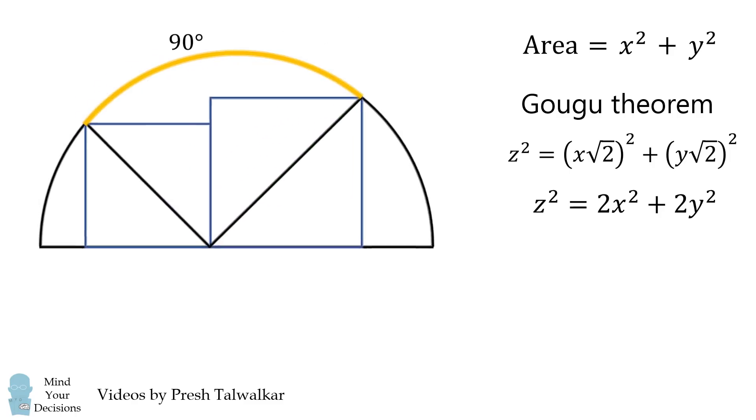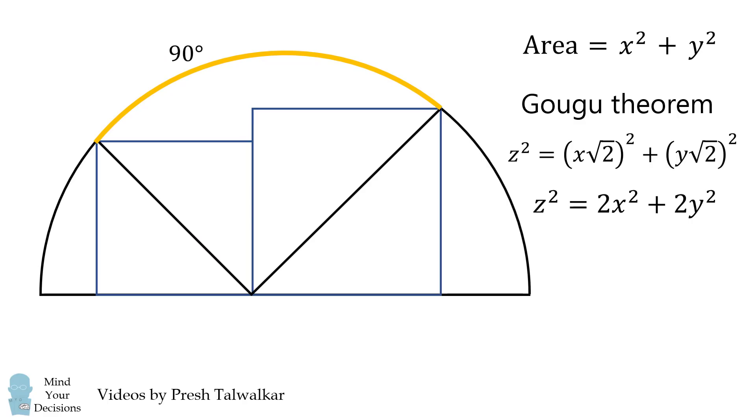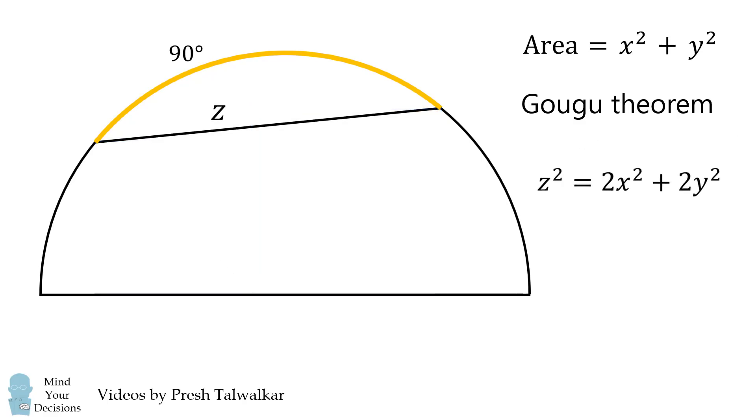How does this help us? We'll go back to our diagram, and consider another way to calculate this chord z. From the center of the circle, draw radii to the endpoints of the chord.